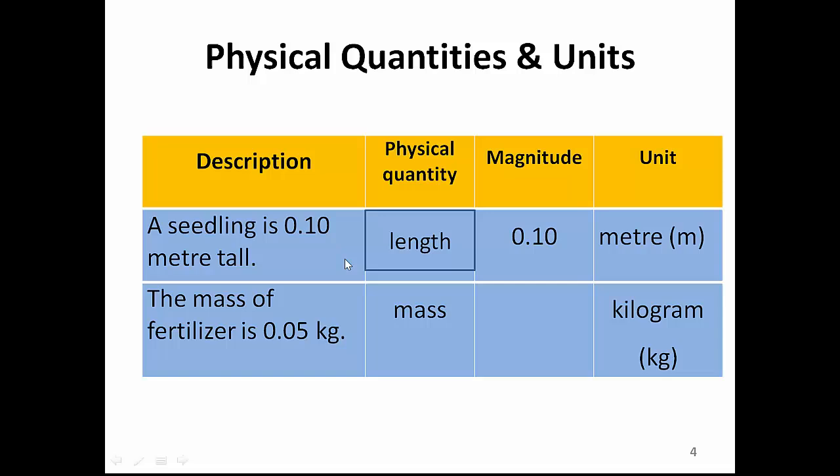How about the mass of a bag of fertilizer, which is 0.05 kilogram. So, the physical quantity that you are measuring is mass. And, can you identify the magnitude? It is 0.05. Of course, the unit is kilogram, symbol kg.